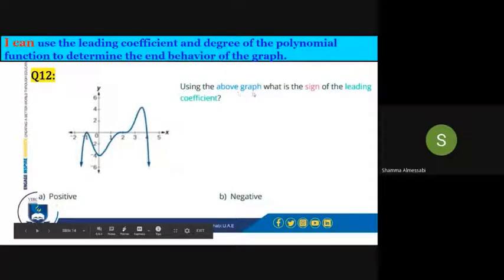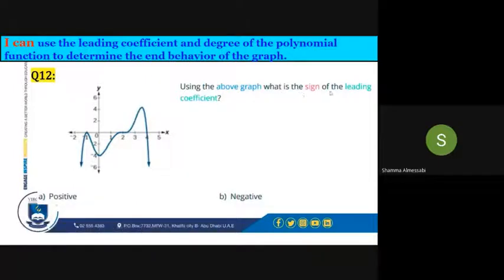Using the above graph, what is the sign of the leading coefficient? The leading coefficient is negative because the graph is going downward.